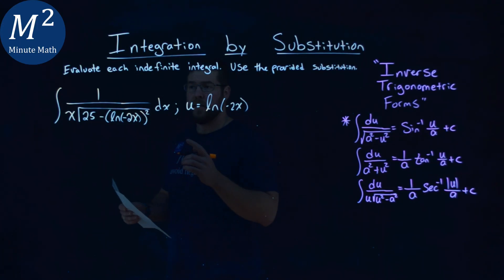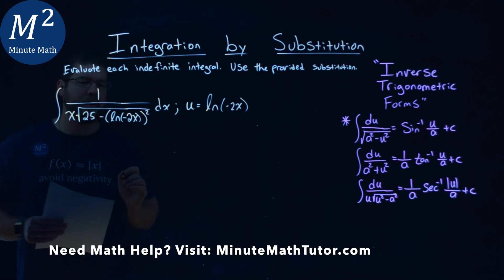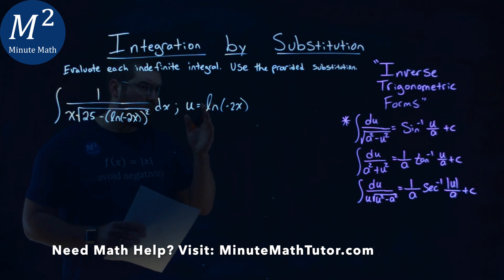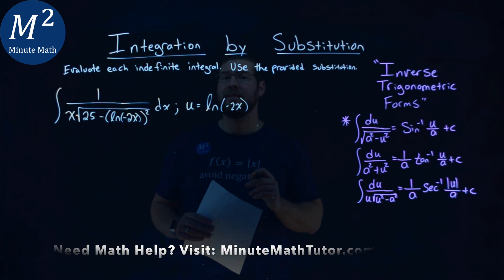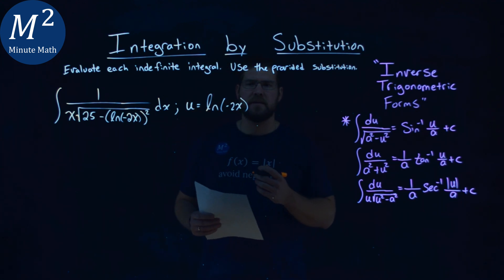We're given this problem right here, the integral of 1 over x times the square root of 25 minus the natural log of negative 2x, that part squared, and then we have a dx at the end. We're given a u value of natural log of negative 2x, and we need to evaluate this indefinite integral.